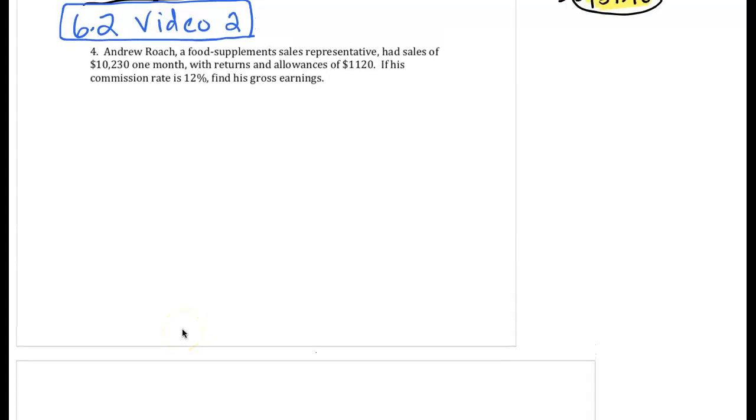Let's continue with section 6.2 on video 2. Andrew has sales of $10,230 in a month with returns and allowances of $1,120. If he gets paid a commission rate of 12%, find his gross earnings.